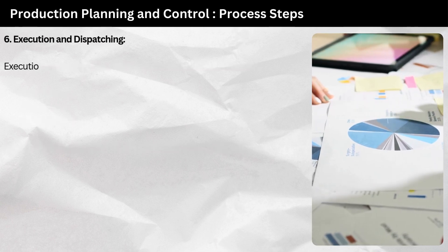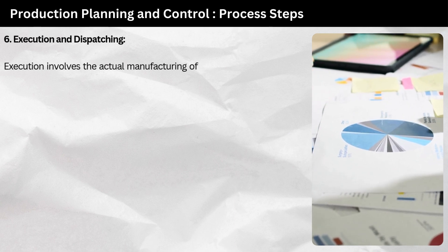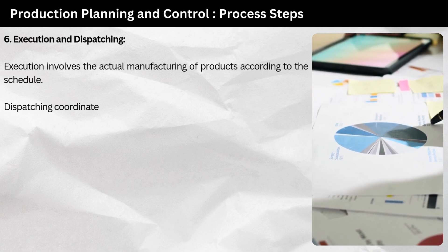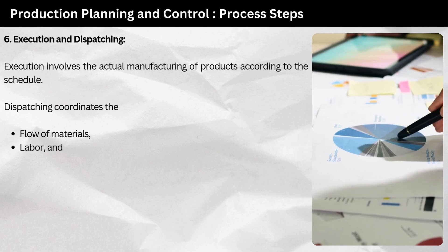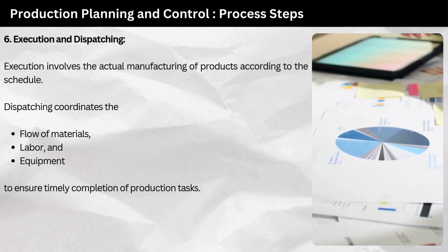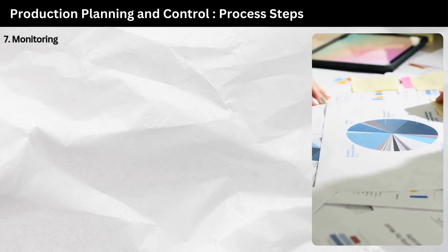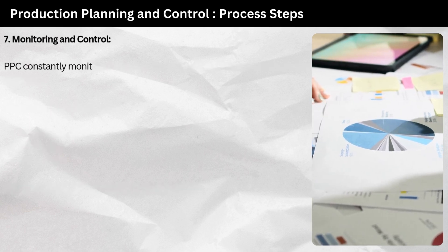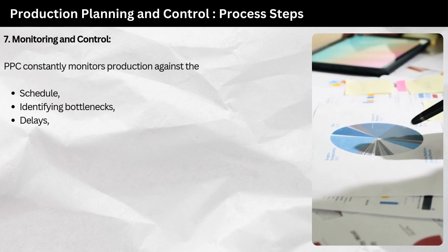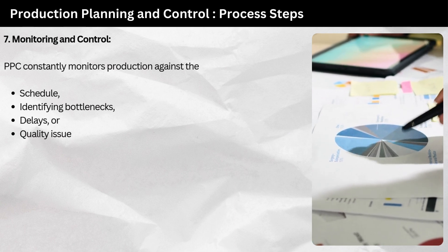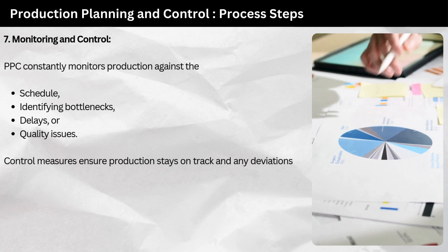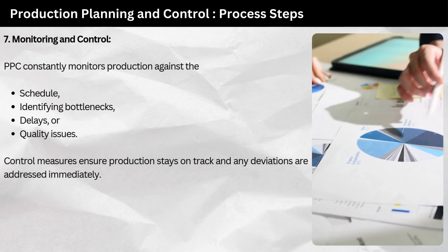Step 6: execution and dispatching. Execution involves the actual manufacturing of products according to the schedule. Dispatching coordinates the flow of materials, labor, and equipment to ensure timely completion of production tasks. Step 7: monitoring and control. PPC constantly monitors production against the schedule, identifying bottlenecks, delays, or quality issues. Control measures ensure production stays on track and any deviations are addressed immediately.